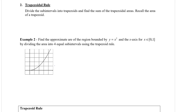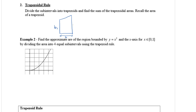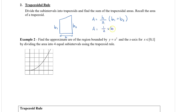Let's recall the area of a trapezoid. I'm going to draw a trapezoid on its side — the width becomes our height in this orientation. This will be base 1 and this will be base 2. The area of a trapezoid is height divided by 2 times (base 1 plus base 2), which we can also write as one-half times h times (base 1 plus base 2).